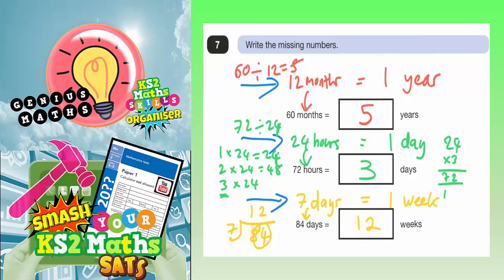And there's your answers. 60 months is 5 years. 72 hours is 3 days. And 84 days is 12 weeks.